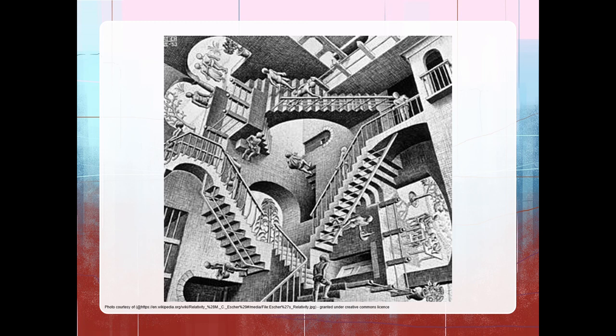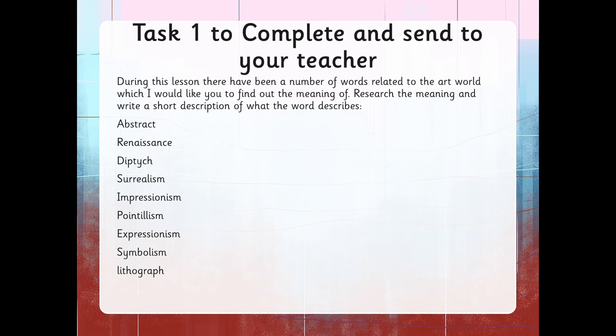So, your first task to complete and send to your teacher. During this lesson there have been a number of words related to the art world which I would like you to find out the meaning of. Research the meaning and write a short description of what the word describes: Abstract, Renaissance, Diptych, Surrealism, Impressionism, Pointillism, Expressionism, Symbolism, and Lithograph.